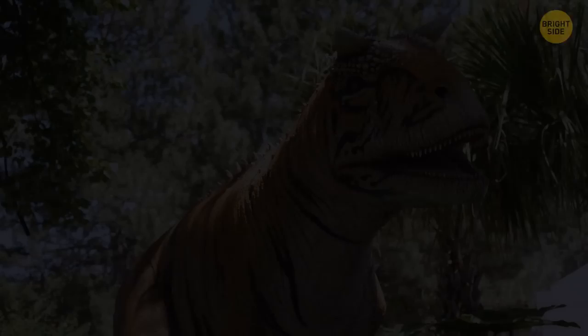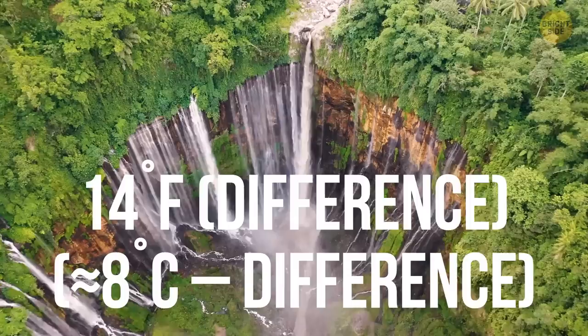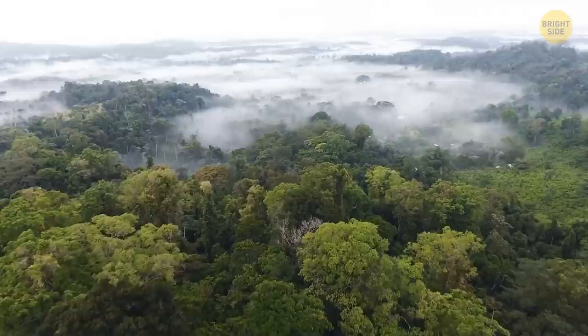Well, dinosaurs would have had to survive a lot more than an asteroid to be living nowadays. About 55 million years ago, the temperatures on the planet rose. The climate became 14 degrees Fahrenheit hotter than it is today. Rainforests flourished, and vegetation was abundant.